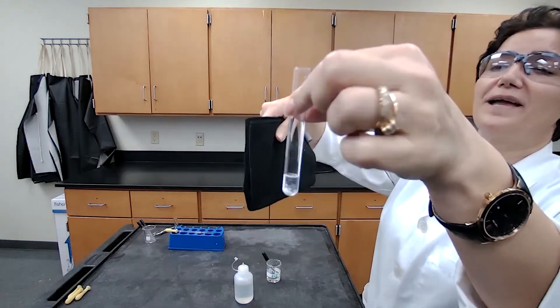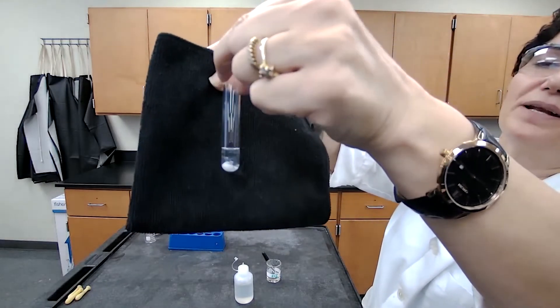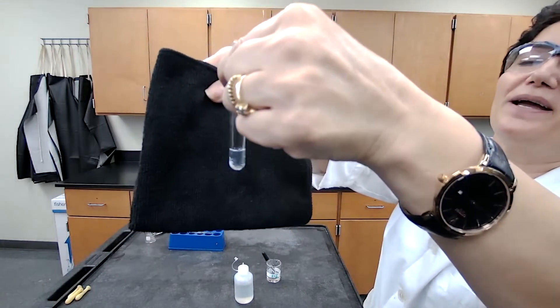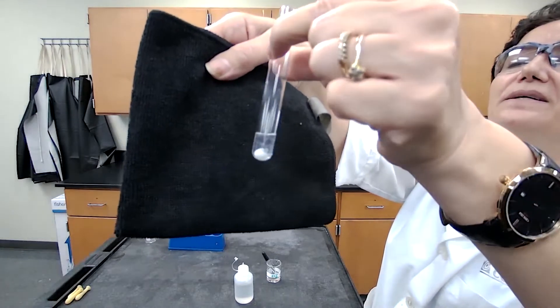After the centrifuge, we have a clear solution and a precipitate at the bottom of the test tube. If I bring it close and rotate, you should be able to see the white precipitate and the clear solution.